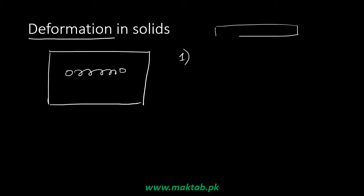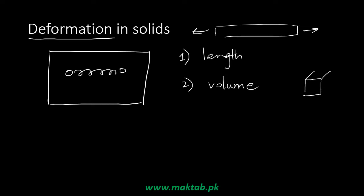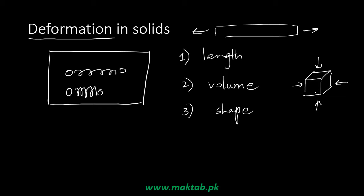There are three types of deformation. First, I can stretch a solid by applying force on both sides, changing its length. Second, I can force it on all six sides of a cube, compressing the springs, and overall the volume will decrease. Third, I can deform its shape — if I have a cube and I deform it into a different form, the volume and length are unchanged but the shape changes. We call this deformation.